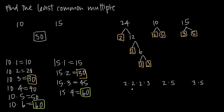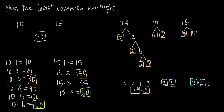The only number with repeating factors is 24, which I can rewrite as 2 cubed times 3. So: 24 has 3 factors of 2 and 1 factor of 3; 10 has 1 factor of 2 and 1 factor of 5; and 15 has 1 factor of 3 and 1 factor of 5. To find the least common multiple, I need to take the largest number of each factor. I can see I have factors of 2, factors of 3, and factors of 5 across these three numbers.